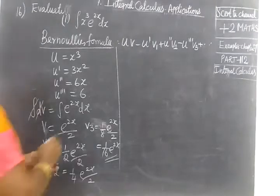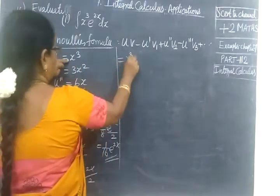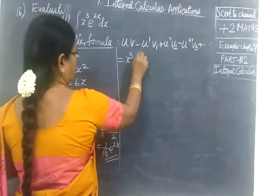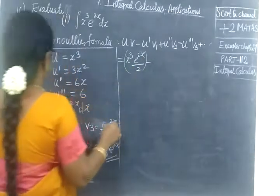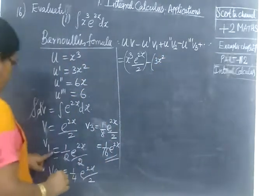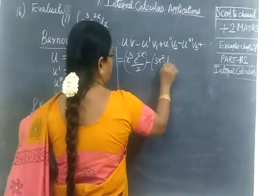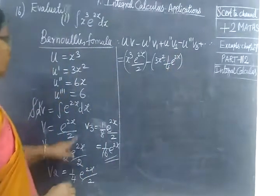Now we apply the formula. U is x³, V is e^(2x) by 2, minus U' which is 3x² times V1 which is e^(2x) by 4.